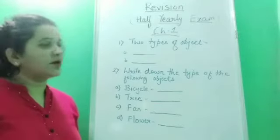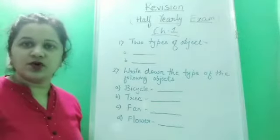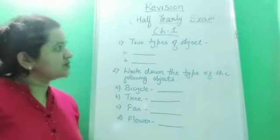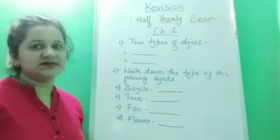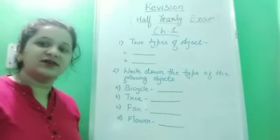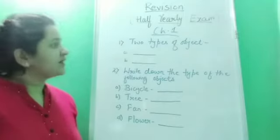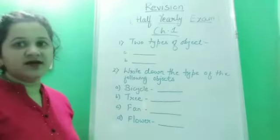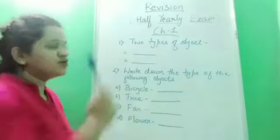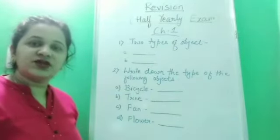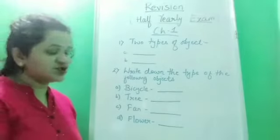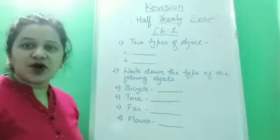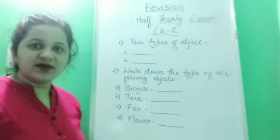Some questions from chapter number 1. You have to do these questions in your notebook — I will tell you the answers. We will discuss the answers, but you have to write them down in your notebook. From chapter number 1, the first question: two types of objects. Children, tell me what are the two types of objects found in our nature? They are natural objects and man-made objects.